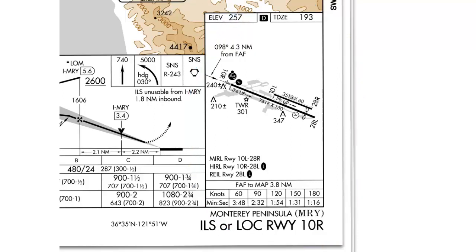The first portion of the airport diagram is the airport elevation, which will always be shown in feet MSL or above sea level. In this case, for Monterey, the elevation is 257 feet. Next to the airport elevation, if it's a precision approach, you'll have the touchdown zone elevation — the specific elevation for the touchdown zone of the runway of intended landing. In this case, it's the touchdown zone elevation for runway 10 right. Even though you can circle on this approach, it only gives you the touchdown zone elevation for 10 right, since that's where the precision approach goes to.